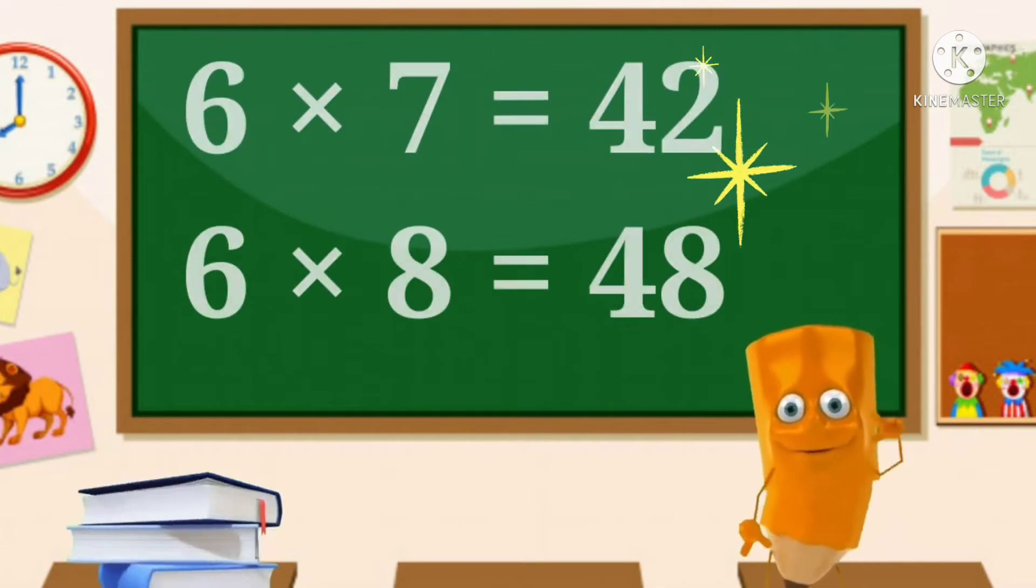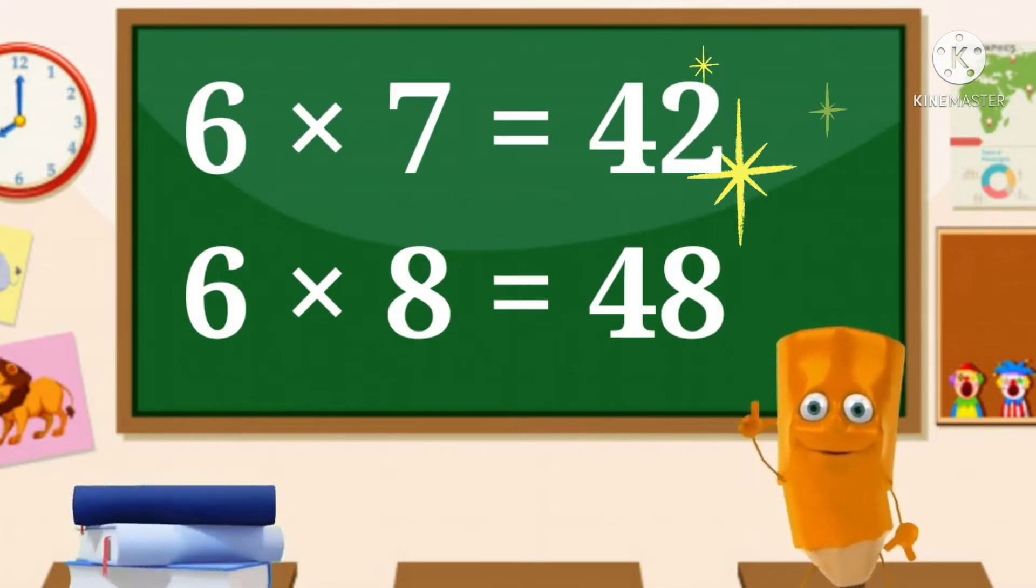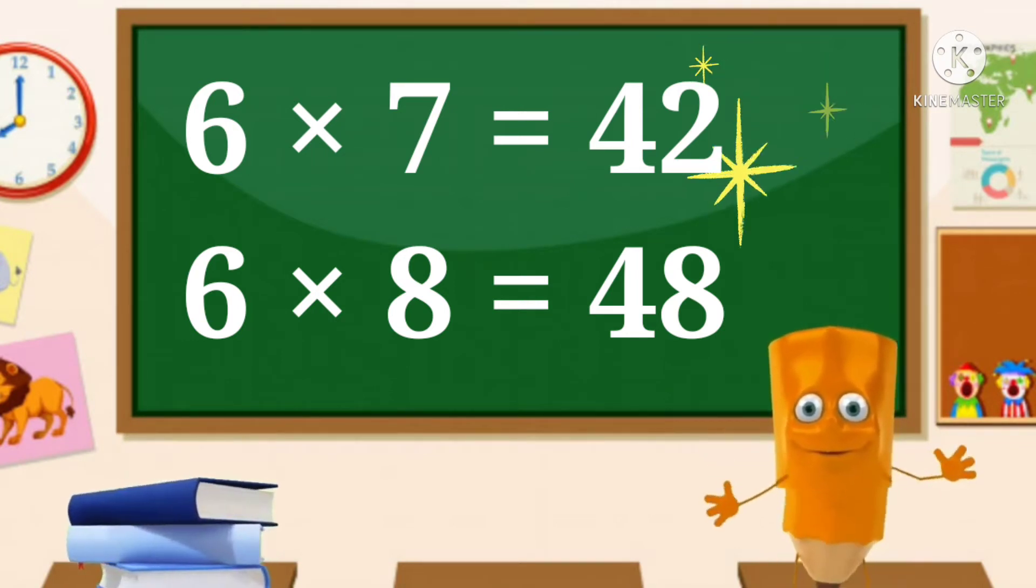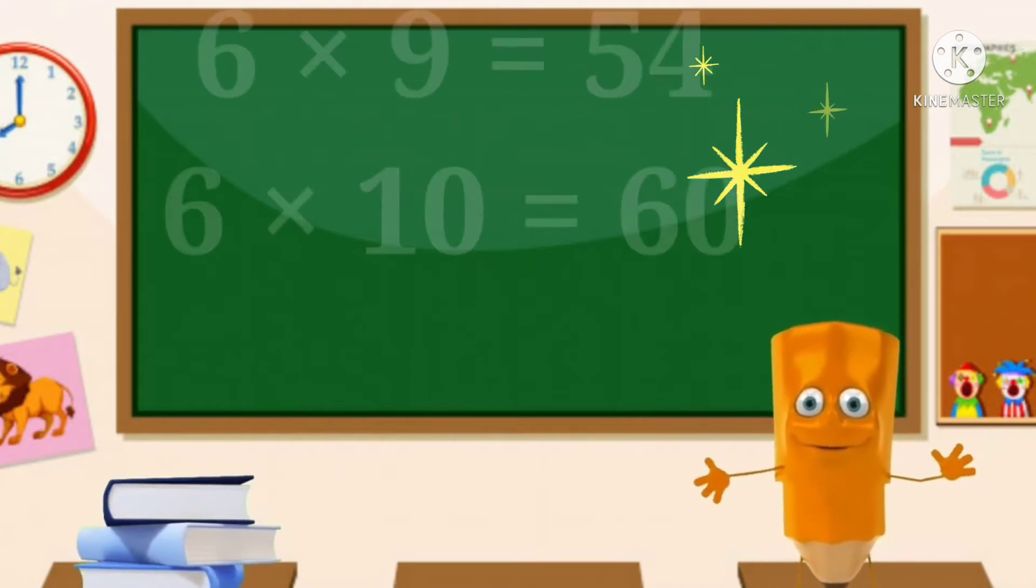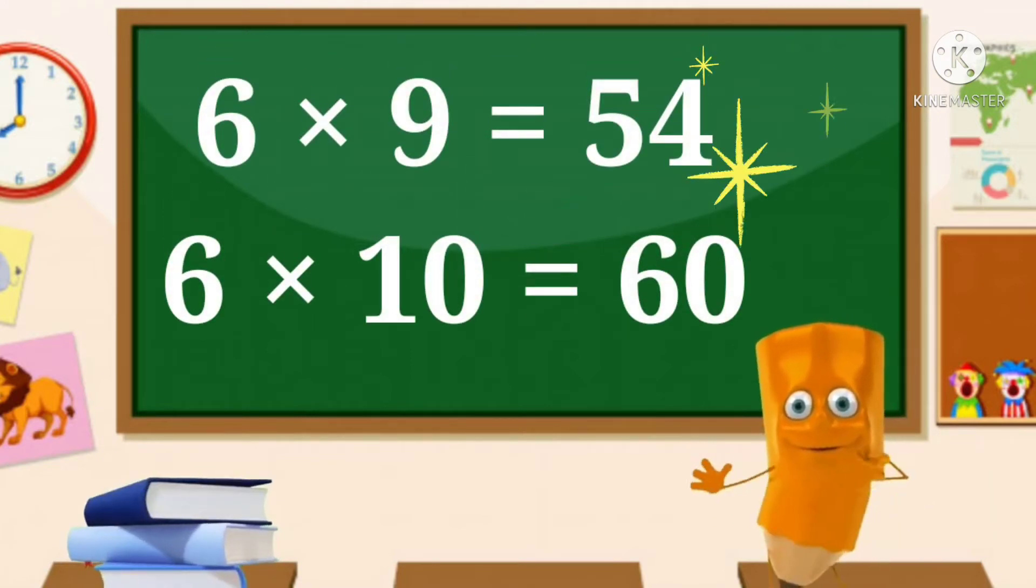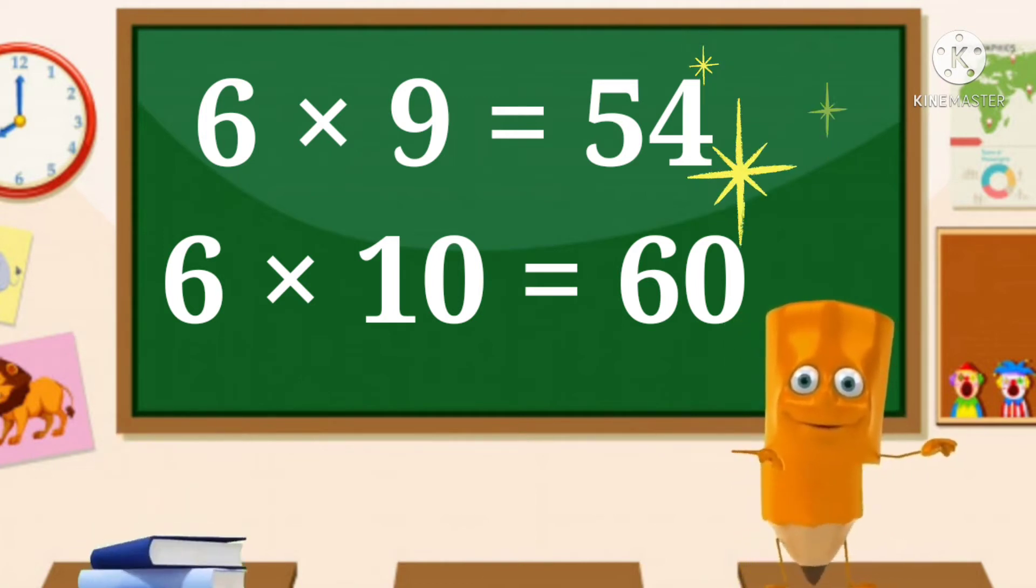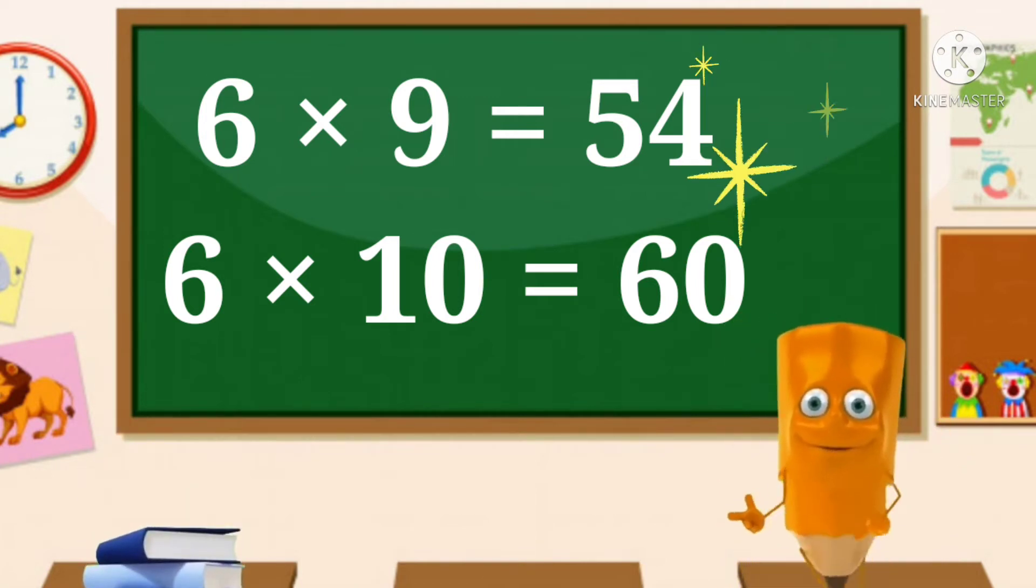6 sevens are 42, 6 eights are 48. 6 sevens are 42, 6 eights are 48. 6 nines are 54, 6 tens are 60. 6 nines are 54, 6 tens are 60.